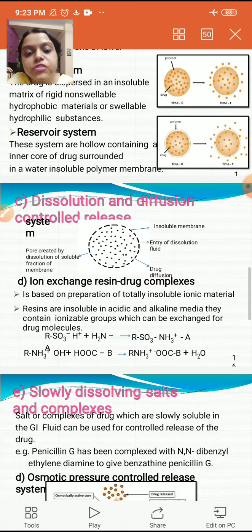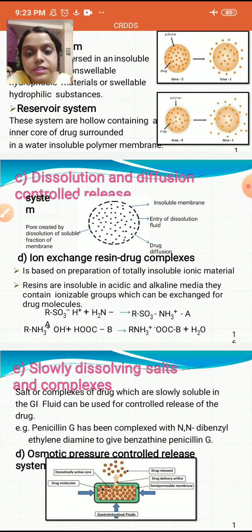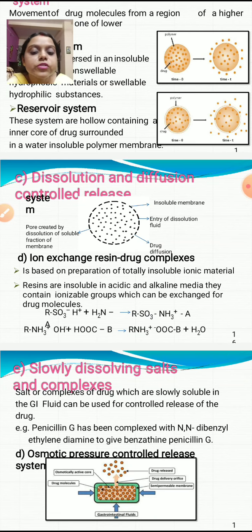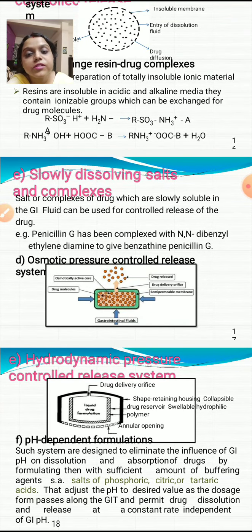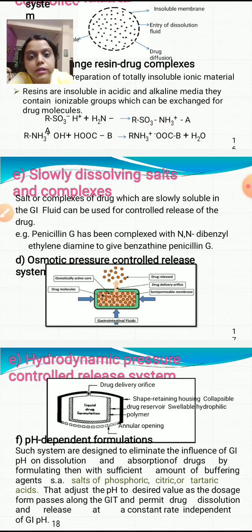Ion exchange resin drug complexes are based on preparation of totally insoluble ionic material. Resins are insoluble in acidic and alkaline media and contain ionizable groups which can be exchanged for drug molecules, as shown in the equations. For slowly dissolving salts and complexes, salts or complexes of a drug that are slowly soluble in gastrointestinal fluid are used for controlled release — for example, penicillin G complexed with N,N-dibenzylethylenediamine to give benzathine penicillin G.